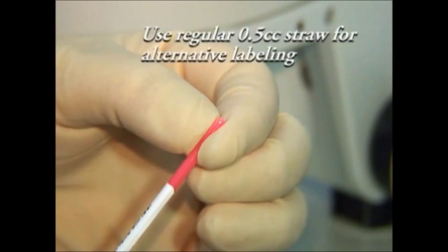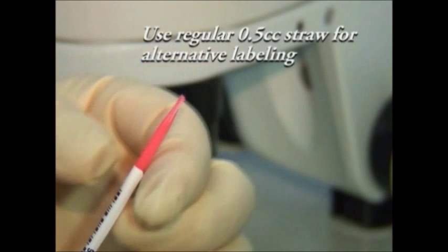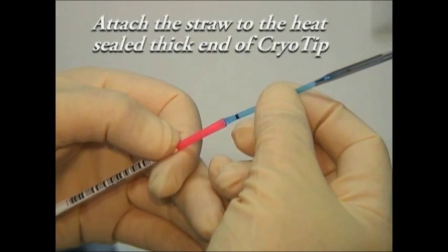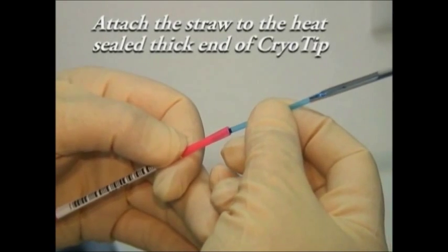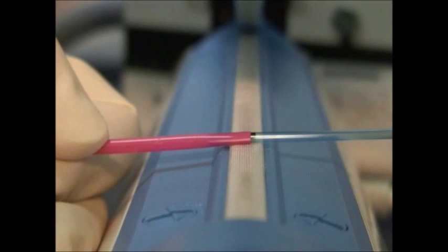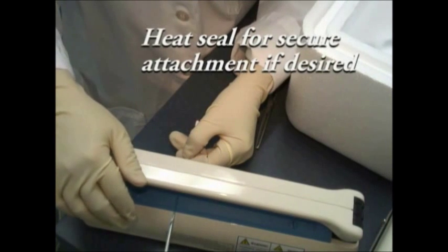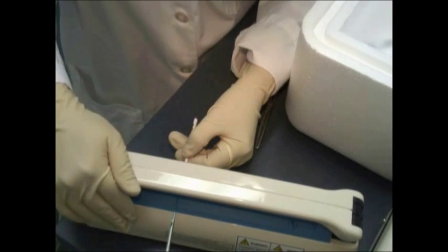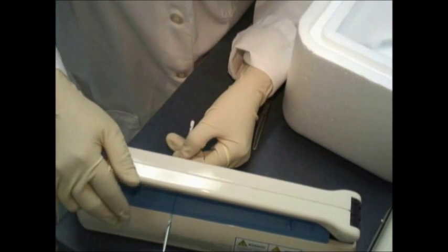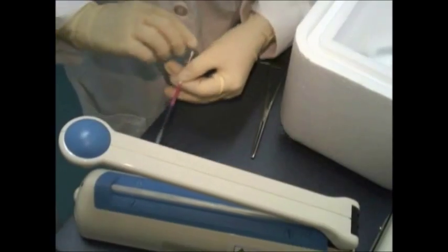Once the seals of the cryotip are checked and are found to be good, the cryotip is loaded onto a straw. Then they are appropriately labeled, heat sealed again, and then plunged into liquid nitrogen. At our lab, we get 85 to 95% survival of embryos after vitrification procedure.